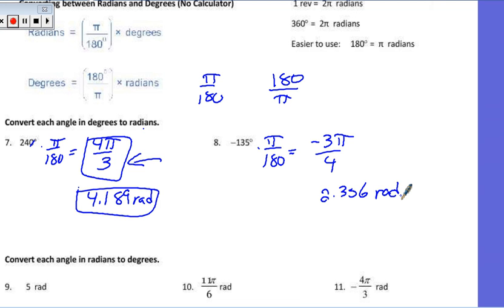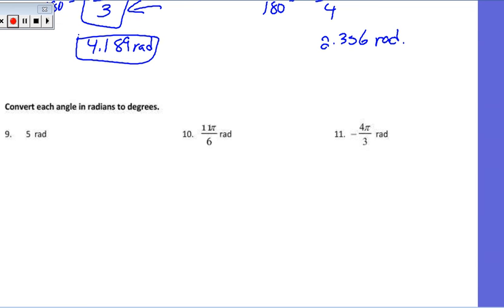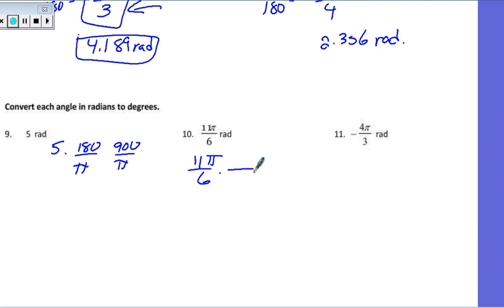To go from radians into degrees, we use the opposite conversion rate to get pi out of there. If I'm looking at 5 radians — this one is not in terms of pi, it's just 5. We'd have 5 times 180 over pi, and that would get us 900 over pi degrees. For 11 pi over 6, the conversion rate is 180 degrees equals pi, the pi's cancel, 6 goes into 180 to give 30, times 11 — this is the same as 330 degrees.